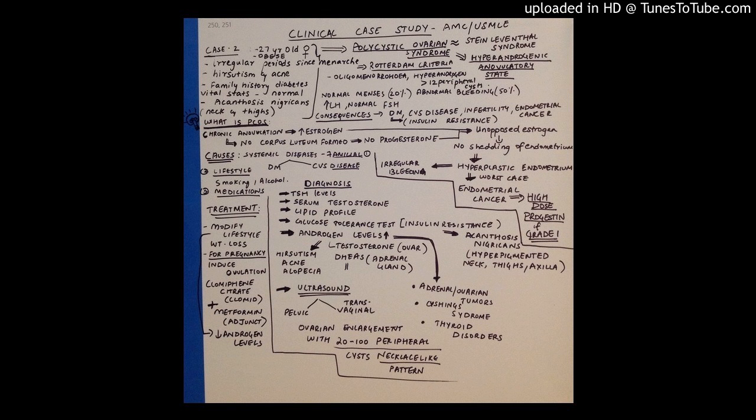On being asked about family history, she says there's a family history of diabetes, and her vital stats appear to be normal. From all these findings, when you come to a differential diagnosis, PCOD or PCOS will be one of the most significant conclusions.